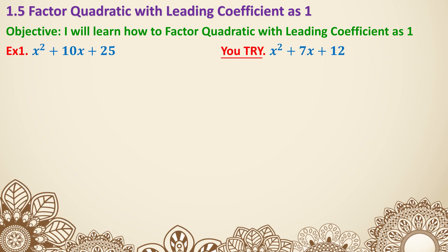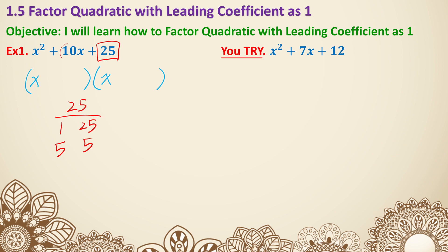Let's move on to more examples. Example 1: we start with x inside both parentheses. We need two numbers that multiply to get 25. Breaking it down: 1 and 25, or 5 and 5 — only two options. 1 plus 25 is 26, not 10. But 5 plus 5 is 10. Since the two parentheses are the same, you can also write this as x plus 5 squared.